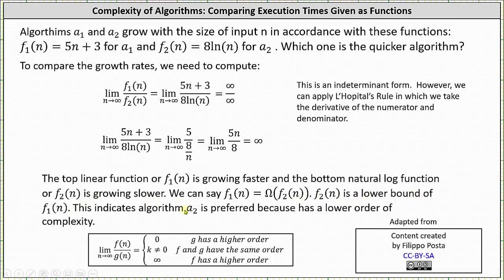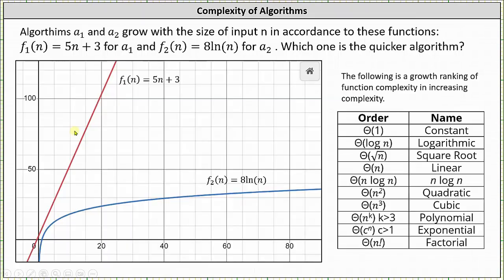This tells us that algorithm A sub two is preferred because it has a lower order of complexity and is a quicker algorithm. Looking at this graphically: in red we have the graph of f sub one of n, and in blue the graph of f sub two of n. Analyzing the graph makes it much more obvious that f sub two is the quicker algorithm. On the right, a growth ranking of function complexity in increasing order is included, which you may find helpful for future reference.